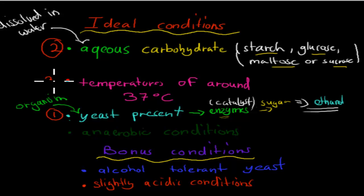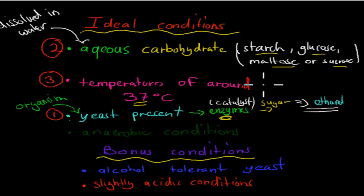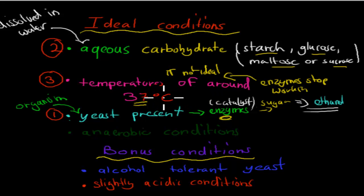We also want temperatures of around 37 degrees Celsius. For enzymes involved in wine making, the temperature can be a bit lower — around 25 degrees Celsius — while for beer and others it's about 37 degrees Celsius. The reason is that enzymes become denatured if the temperature is too low or too high. If denatured, the enzymes stop working. If the temperature is too high, the yeast will also die.